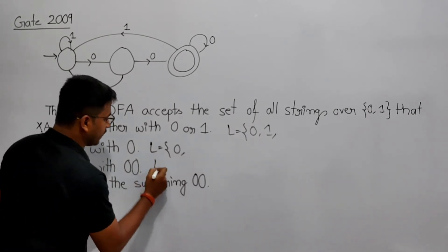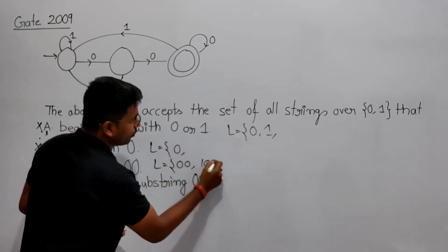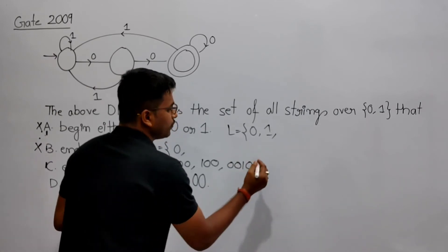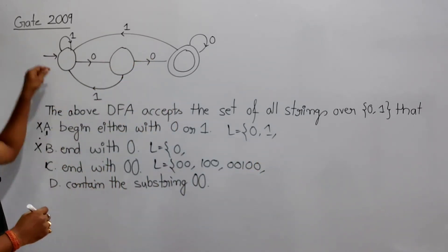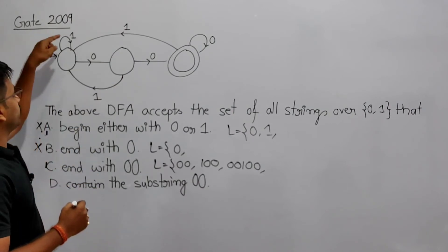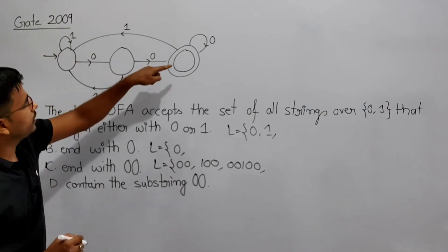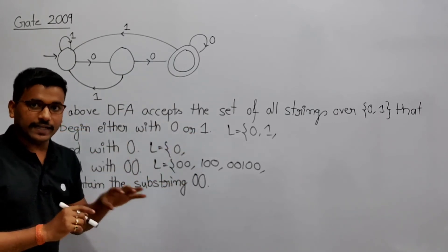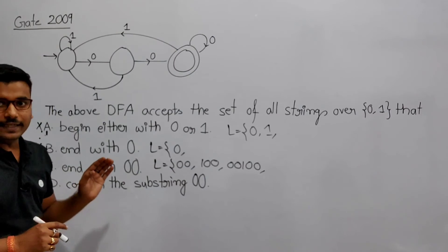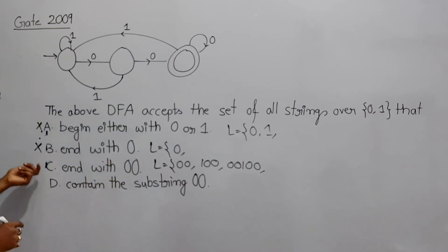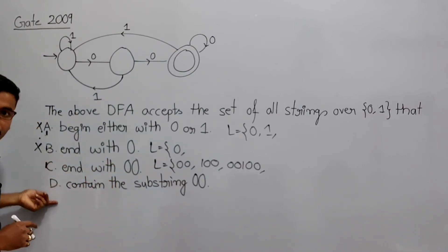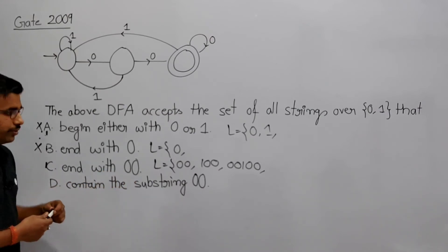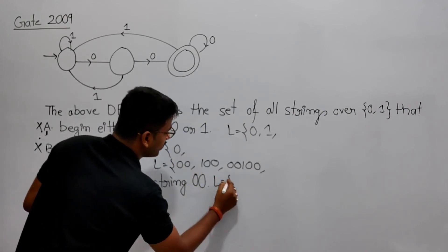Option C says the language contains strings ending in '00'. Now strings like '00', '100', '0000', '1 then 00' — all these strings ending with '00' are getting accepted. So option C looks correct, but we should also verify by eliminating option D.